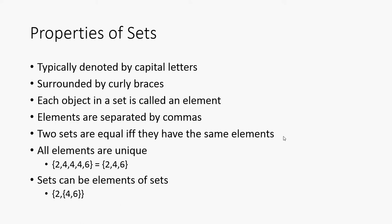So, here are some properties of sets. They're typically denoted by capital letters. They're surrounded by curly braces, as you can see over here. Each object in a set is called an element. Elements are separated by commas. Now, two sets are equal if and only if they have the same elements.